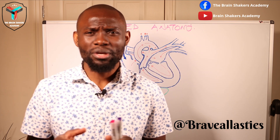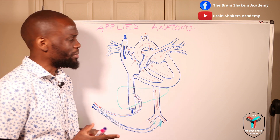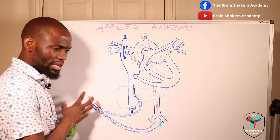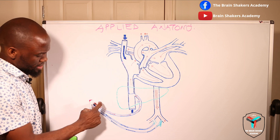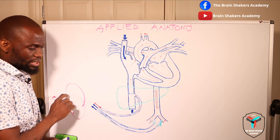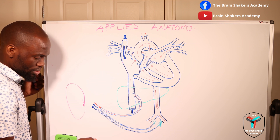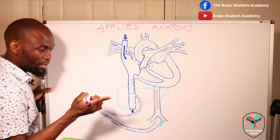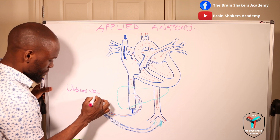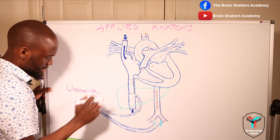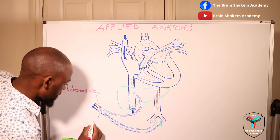Let's get right into it and name some of those parts on the diagram that will help us understand the fetal circulation. We're going to start from where the blood emanates — where the nutrients and oxygen are coming from — which is the placenta. The placenta connects to the fetus with an umbilical cord. In that umbilical cord you have three major vessels: the larger one is the umbilical vein, which carries oxygenated blood from the placenta to the fetus, and then two umbilical arteries.